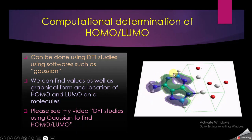We can locate where the HOMO and LUMO are located in the molecule. To find out how we can do this calculation, please see my video on DFT studies using Gaussian to find HOMO and LUMO. Thank you.